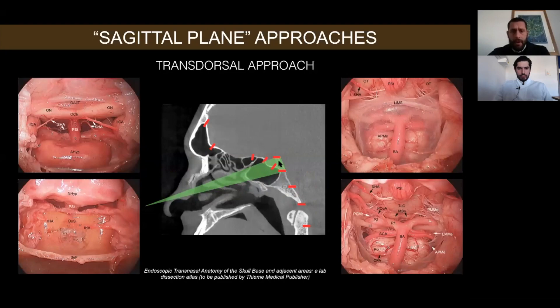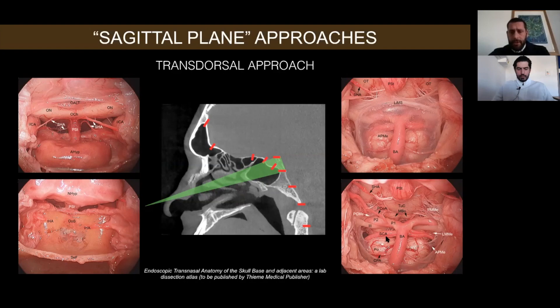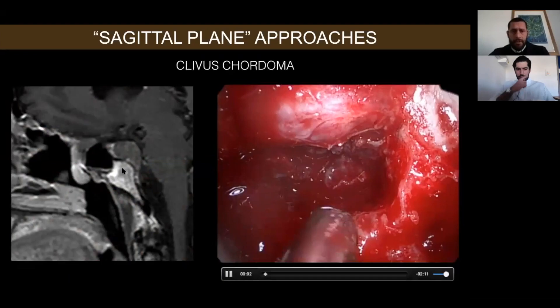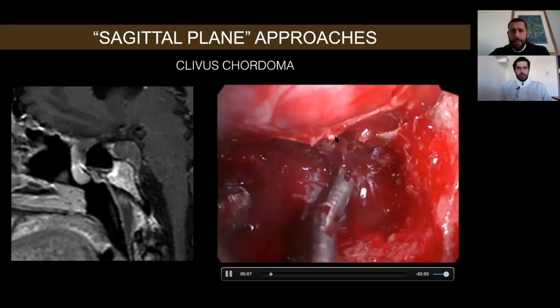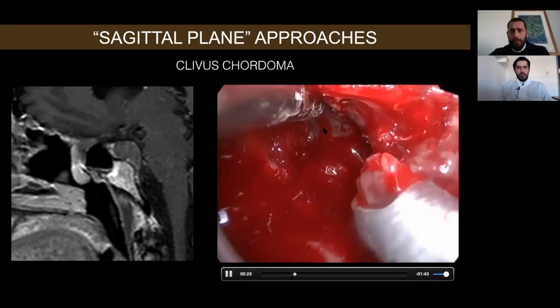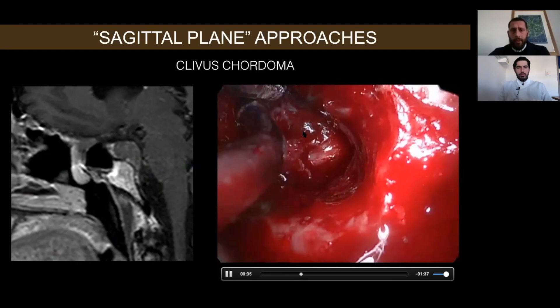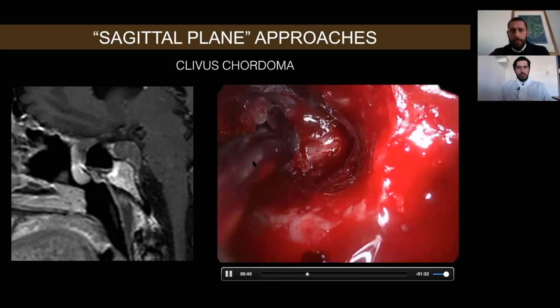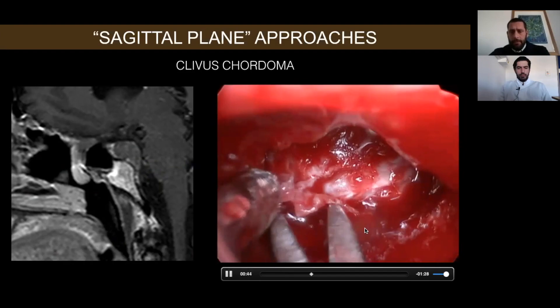Now we start with the posterior skull base, dividing the clivus into three thirds. The first is the transdorsal approach. The pituitary gland, chiasm, dorsum sellae, and intracranial structures are visible — the basilar artery behind the anterior pontine membrane, and the third cranial nerve between the posterior cerebral artery and the superior cerebellar artery. A clinical example: a clival chordoma of the dorsum sellae. We progressively remove the lesion using compression of the pituitary gland superiorly and suction to expose the dura. This patient also had a sixth cranial nerve palsy on the right side, which we decompressed.